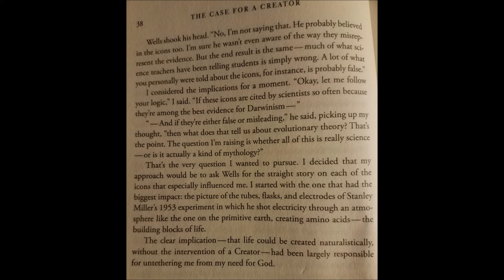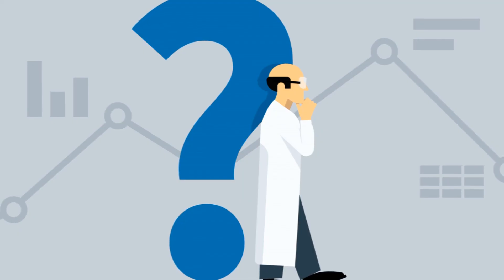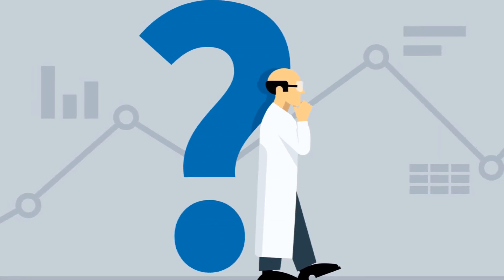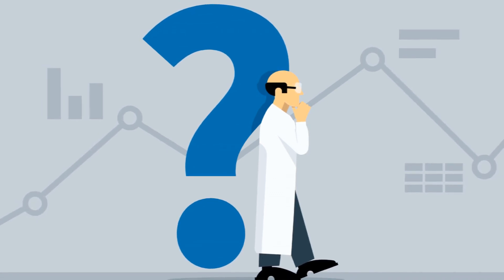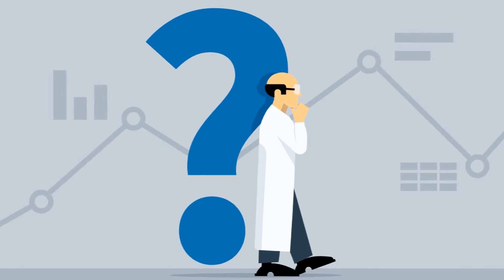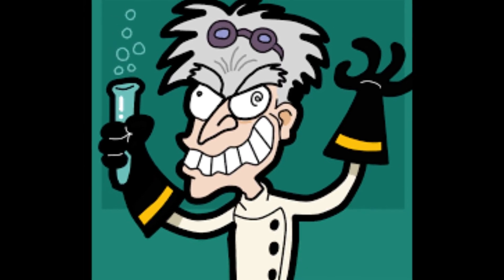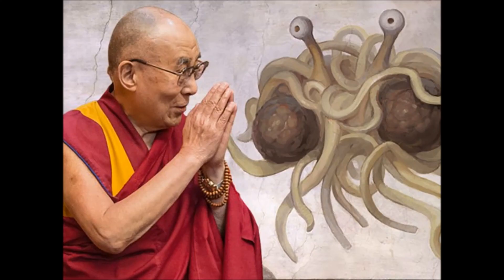The first icon is the picture of the tubes, flasks, and electrodes of Stanley Miller's 1953 experiment, in which he shot electricity through an atmosphere like the one on primitive earth, creating amino acids — the building blocks of life. The clear implication that life could be created naturalistically, without the intervention of a creator, had been largely responsible for 'untethering' Strobel from his need for God. Which God did you have a need for, exactly? I wouldn't say that there is an inherent need for a deity, since atheism is the default position. Sure, different religions sprout up in every culture, and the argument that humans have a psychological disposition to believe in an afterlife or deity could be made — but that's not a need. You act as if you've been tethered to a need for Yahweh since birth, and only deceitful evil scientists can set you on the path to atheism. The one true God that you actually need is the Flying Spaghetti Monster — don't fight him, he loves you.